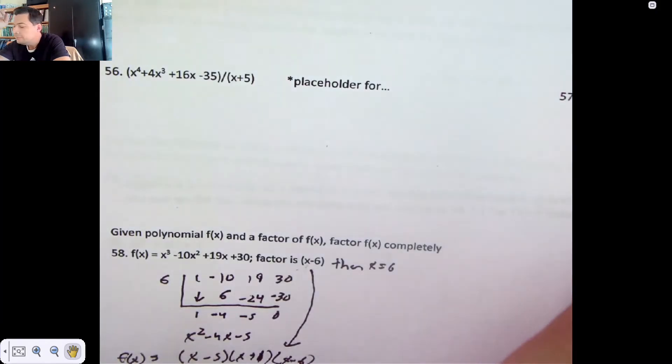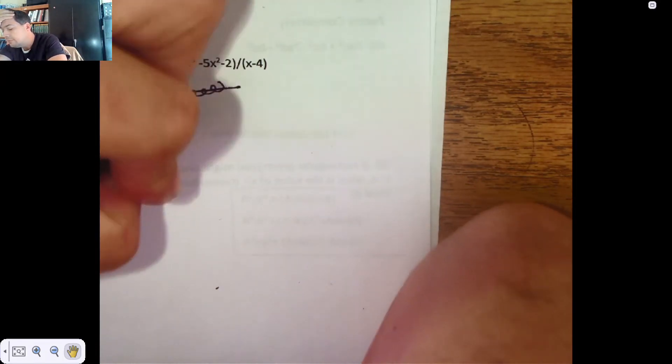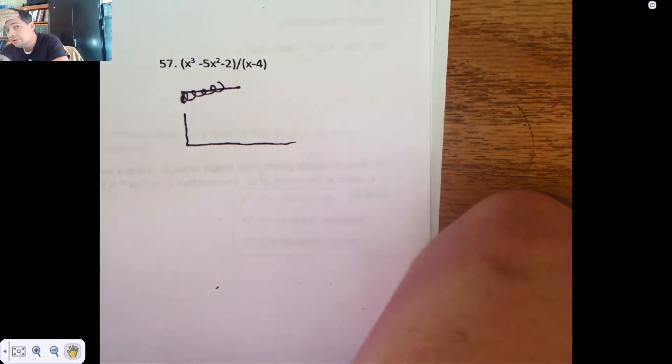Moving on to some easier stuff here. It says divide the following using synthetic divisions. These are all synthetic divisions. They're not hard. Some of these will have remainders of 0, some of them won't. I don't know why I drew the actual divisor symbol. It's supposed to be upside down, 2 stories tall.